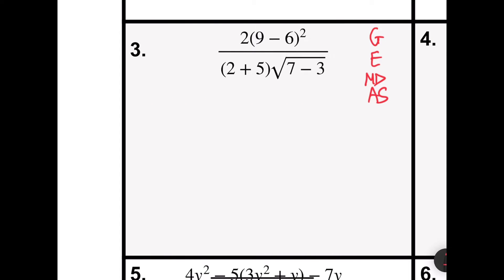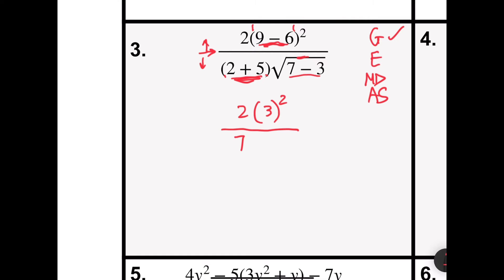Problem number 3 says 2 times 9 minus 6 squared over 2 plus 5 times the square root of 7 minus 3. I'm going to start with grouping symbols, and there are a lot of them in this problem: the parentheses on top, the fraction bar which separates the top from the bottom and behaves like a grouping symbol, the set of parentheses on the bottom, and the square root symbol. So I'm going to work 9 minus 6, 2 plus 5, and 7 minus 3 first. That gives me 2 times 3 squared over 7 times the square root of 4.